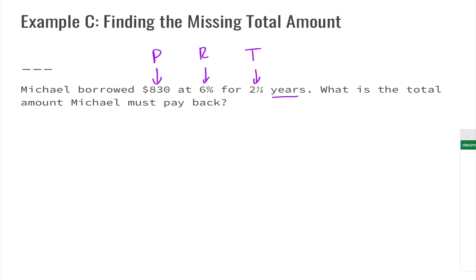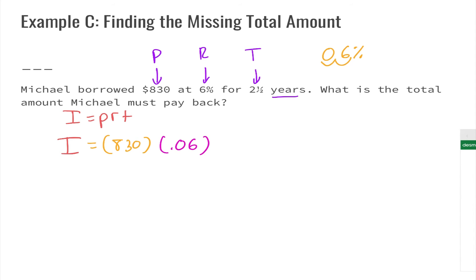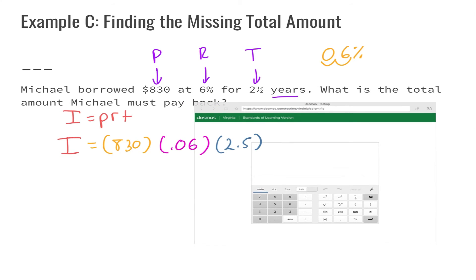Our formula every single time is I equals P times R times T — interest equals principal times rate times time. We have P, R, and T, so we're solving for I. Our principal is eight hundred thirty dollars. Six percent converted to a decimal — move the decimal two places to the left — gives us 0.06. Two and a half years is written as 2.5. We pull out our calculator and type in 830 times 0.06 times 2.5.